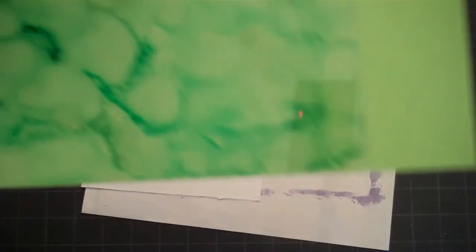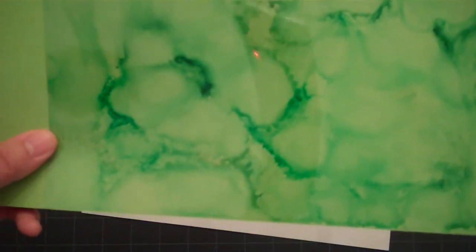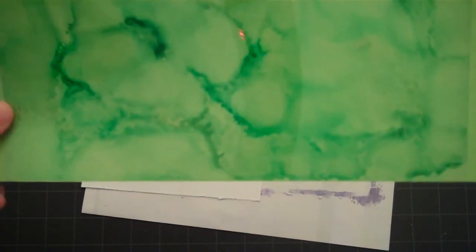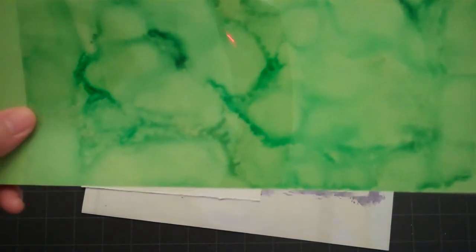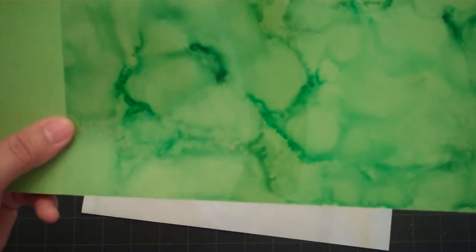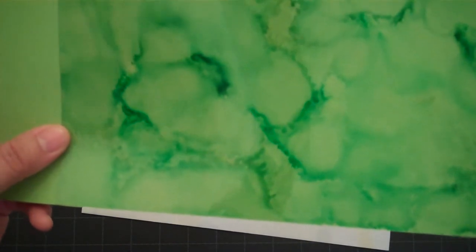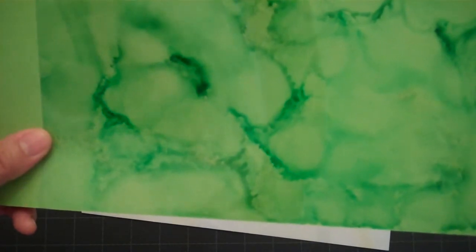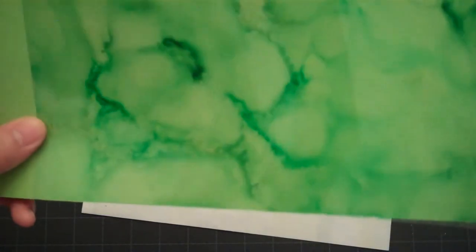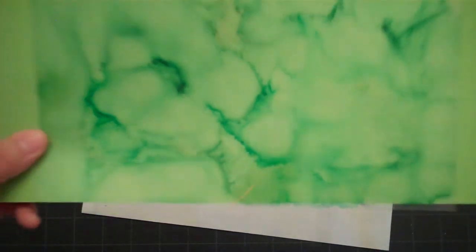And you can use this acetate piece to cut with a paper punch. Sometimes the punches are a little difficult to get through this. It's a little thick, but I have done it. And of course, your Spellbinder dies are excellent. Or you can just cut it in circles or squares or rectangles to add to your projects. Thanks for watching.